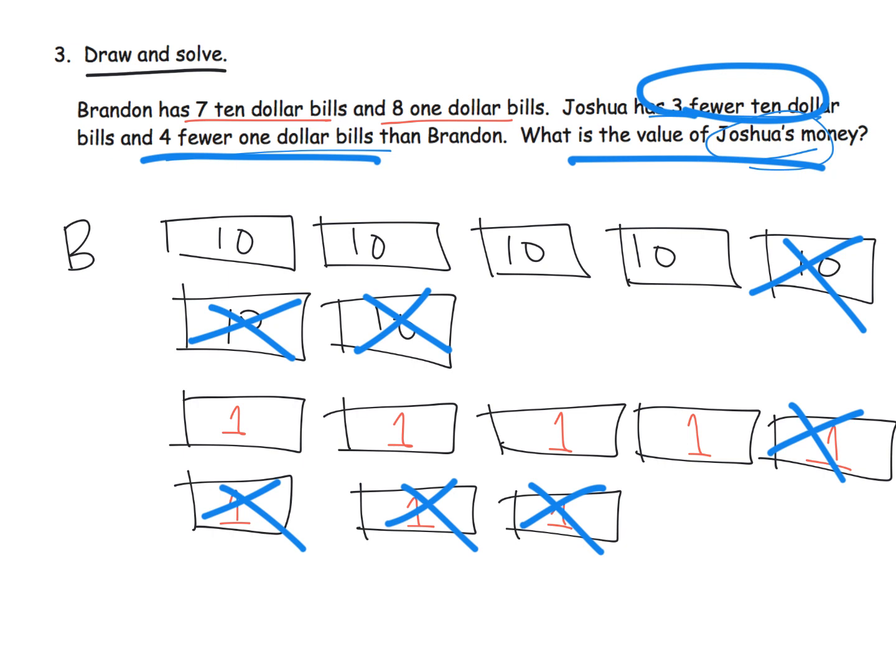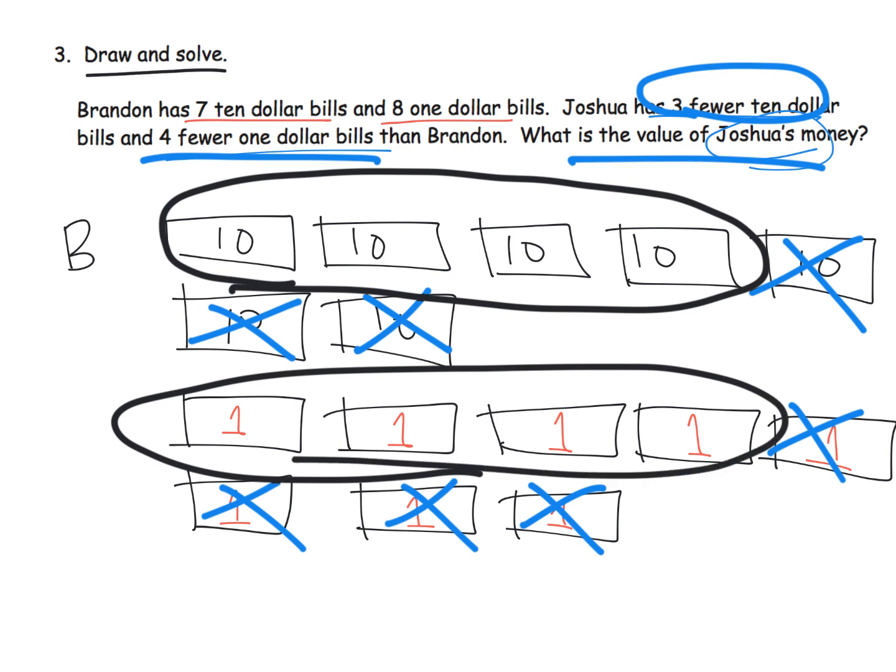So the question is what's the value of Joshua's money? Well, the value of Joshua's money is whatever is left. We can see we have four tens and we have four ones, so Joshua has 44.